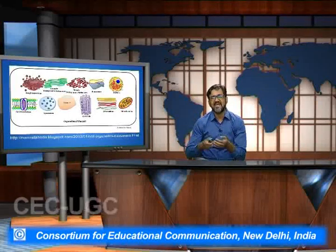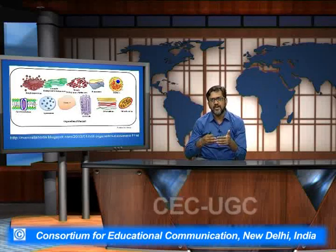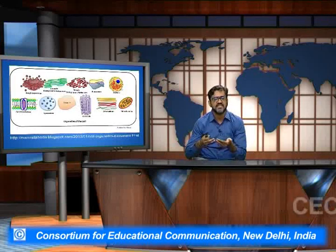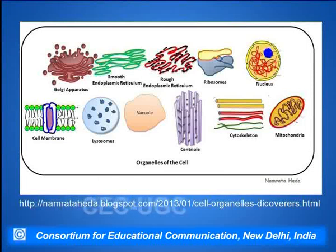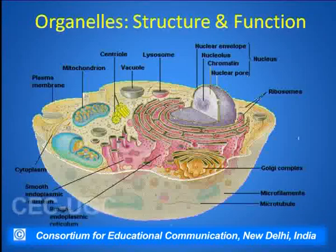Within a cell, apart from these biomolecules, there are various organelles which are also present such as the Golgi apparatus, the nucleus, cell membrane, lysosomes, cytoskeleton structures, and mitochondria. We will come into some of the important organelles one by one.